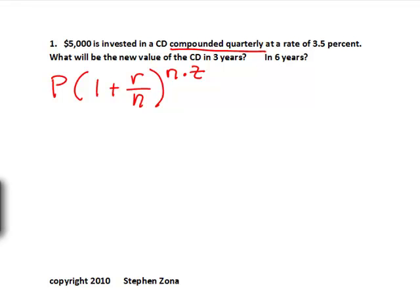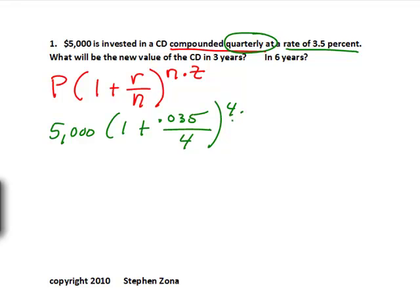Going into this first problem here, what we have is $5,000. You've got one plus 0.035, that's your rate. And then it's going to go over four because it's quarterly. And then that four will appear again in your time. They want to know what's the CD going to be worth in three years. So that's all the plug-in.